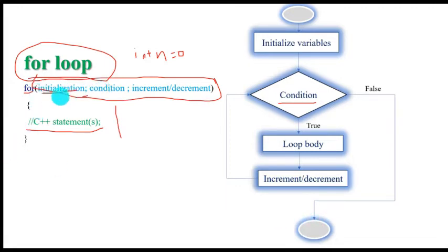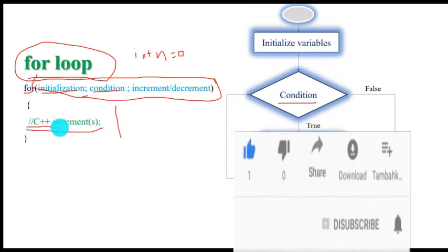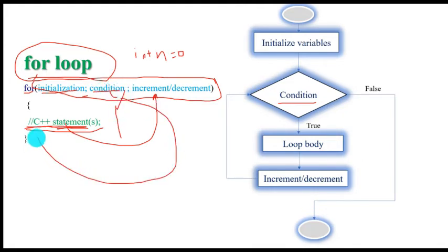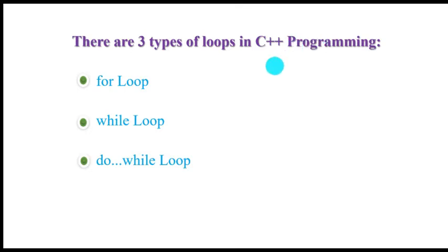So, if the condition is true, there is an initial value, first check the condition. If true, the body executes one time, then auto increment or auto decrement is performed, and the condition is checked again. When the condition is false, simply leave the curly bracket and move to the next instruction. The advantages of using loop segments or iteration: code should be shorter and take less memory — it is easier and requires a small amount of memory.